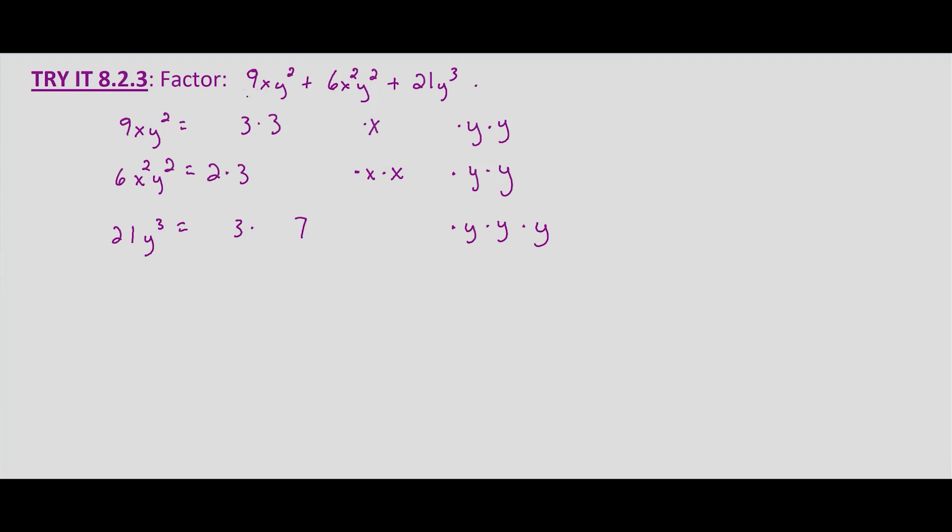And now we look for common factors in all three terms. So we have one column of 3's here, so they each have a common factor of 3. No x's in the last term, so there's no common factor of x.